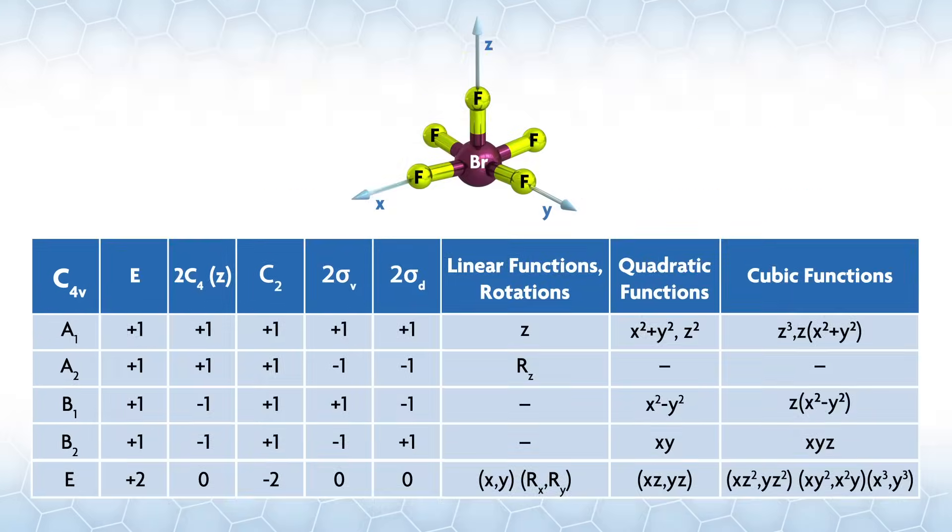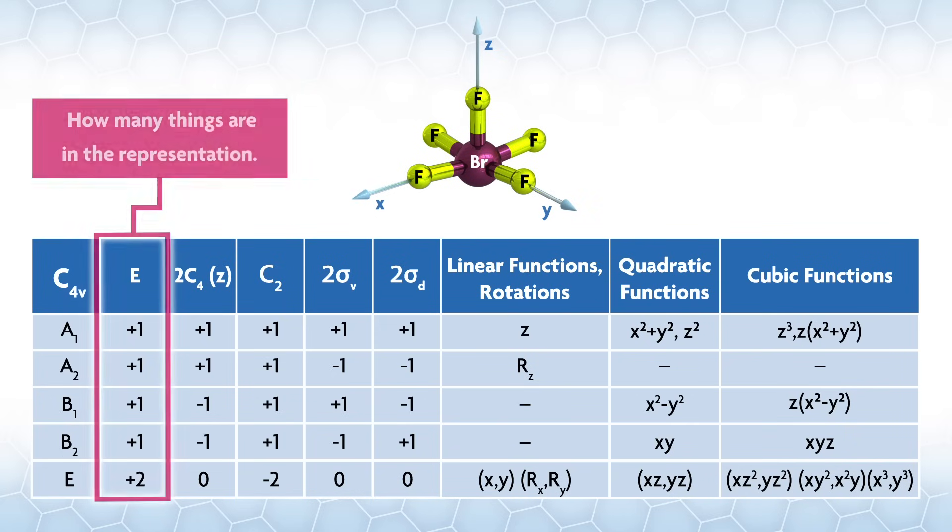So looking at the simple C4v character table, we can look down the column under the identity operation, E. There are four different irreducible reps with plus one and one with plus two. The dimensionality of the rep is always given under identity. Under E will be how many things are in the representation.